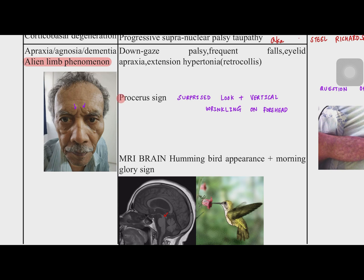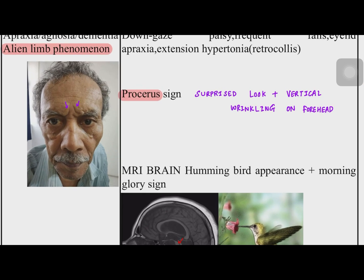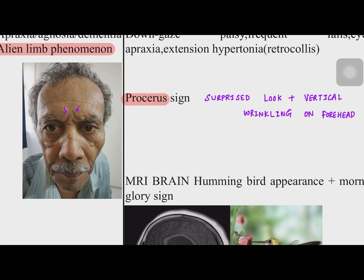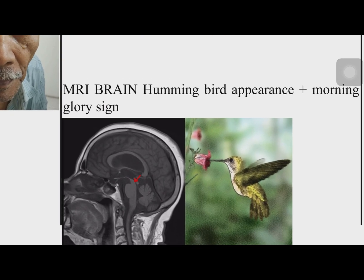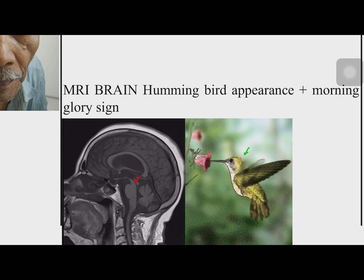The characteristic signs of PSP include the procerus sign — the procerus is the forehead muscle. The procerus sign presents as a surprised look with vertical wrinkling of the forehead at the area of the procerus muscle. On brain MRI, you will see the hummingbird appearance due to midbrain atrophy, where the midbrain simulates the beak of a hummingbird. The morning glory sign is also seen on brain MRI.